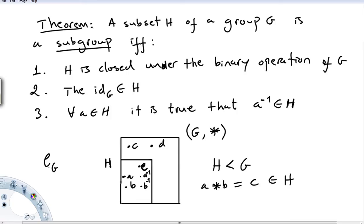The identity of G must be in H. And for all A in H, every single element in H, the inverse is also in H. So if these three conditions hold, then you can say that H is a proper subgroup of G.